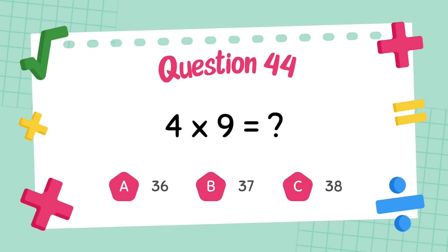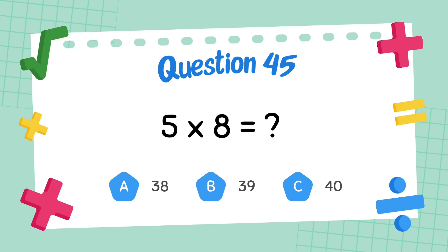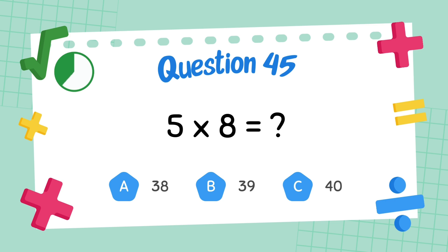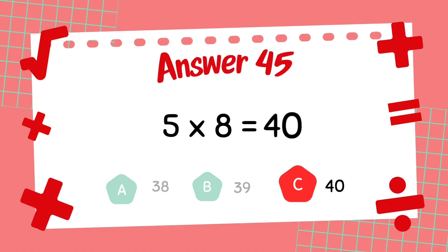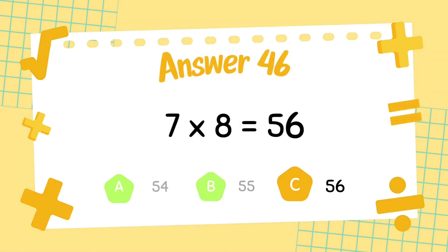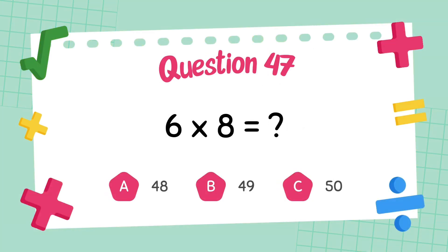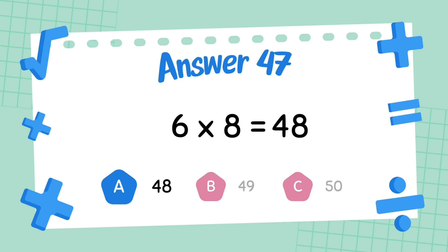What is 4 x 9? The answer is 36. What is 5 x 8? The answer is 40. What is 7 x 8? The answer is 56. What is 6 x 8? The answer is 48.